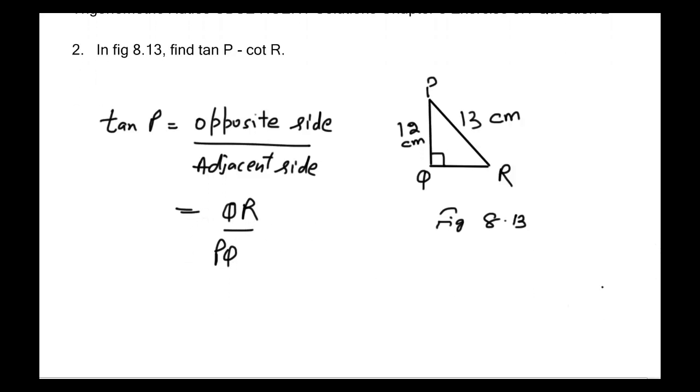We can find the value of QR by using Pythagoras theorem, which is PR² = PQ² + QR². In any given right-angled triangle, hypotenuse² equals base² plus perpendicular².